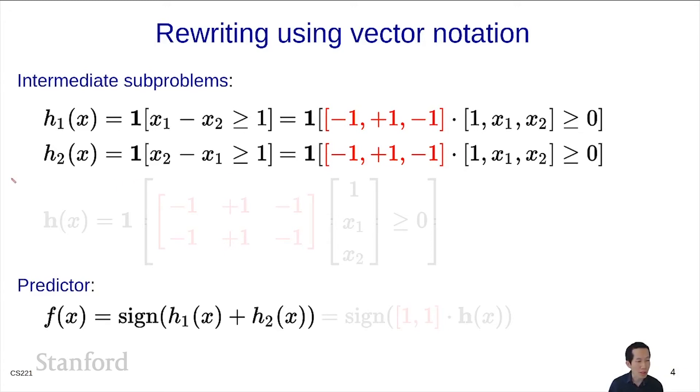We can rewrite h₂ in vector notation as well by reversing the roles of x₁ and x₂. Now we combine h₁ and h₂ by stacking them into a matrix V. This matrix has two rows, and we multiply it by the feature vector. This produces a two-dimensional vector h(x). The predictor is then simply f(x) = sign(w·h(x)), where w is (1,1), which is the sum of the two components.